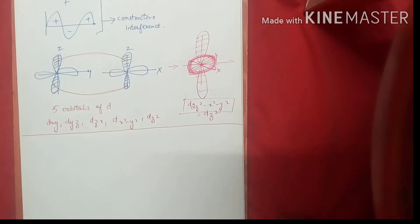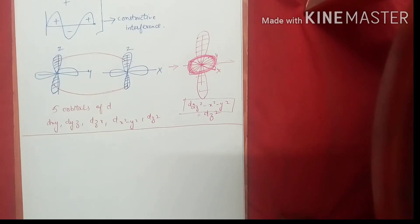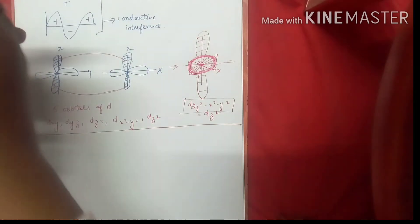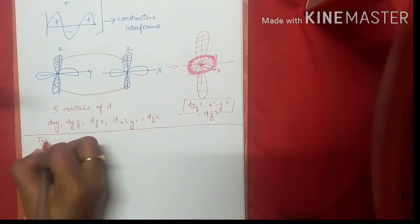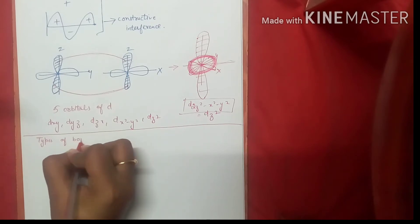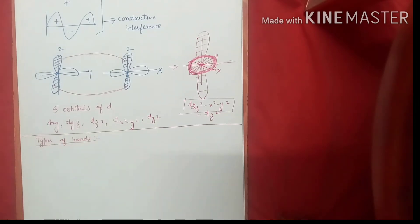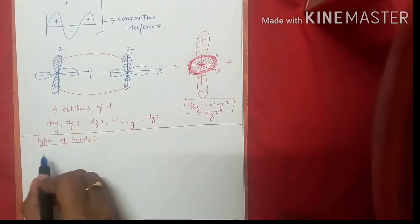Welcome to Netgate Chemistry. So far we have covered types of orbitals, penetration and shielding, consequences of penetration and shielding, some knowledge about the d orbitals — why only five and why not six. Now we are going to study about types of bonds.